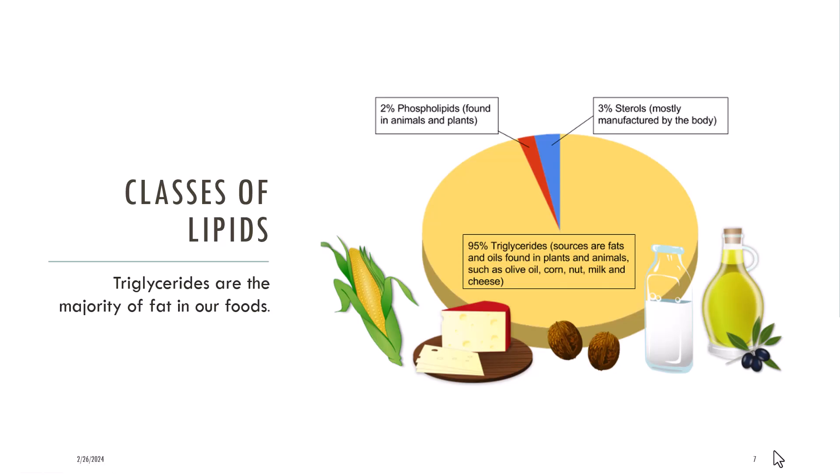There are three classes of lipids known as phospholipids, sterols, and triglycerides. The majority of the fat, 95% of it, consumed in your diet is triglycerides. In this video, we will explore the chemical composition of triglycerides and how their properties affect health.